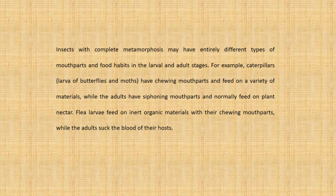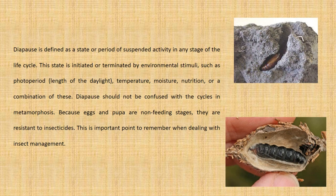Diapause is defined as a state or period of suspended activity in any stage of the life cycle. This state is initiated or terminated by environmental stimuli such as photoperiod (length of daylight), temperature, moisture, nutrition, or a combination of these. Diapause should not be confused with the cycles in metamorphosis. Because eggs and pupae are non-feeding stages, they are resistant to insecticides — an important point to remember when dealing with insect management.